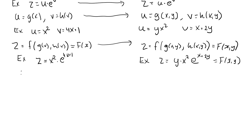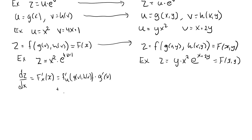Moving on to the chain rule for the first scenario: the derivative of z with respect to x is equal to the partial derivative of f with respect to u, evaluated at g(x) and h(x), times the inner derivative g prime of x, plus the partial derivative of f with respect to v, evaluated at g(x) and h(x), times the inner derivative h prime of x. That was the chain rule for a function of two variables where each variable depended on one variable.